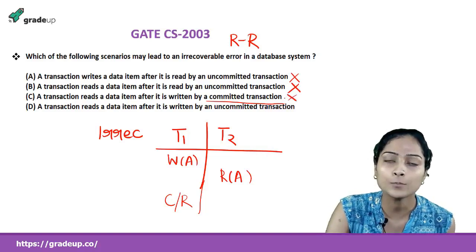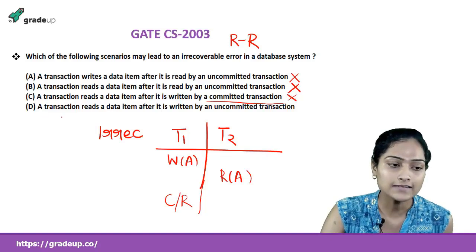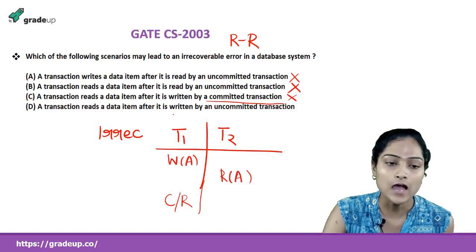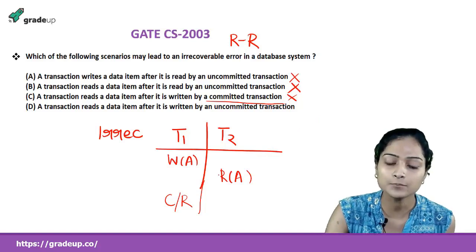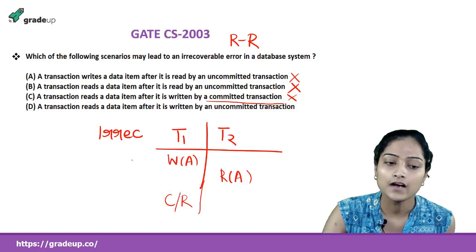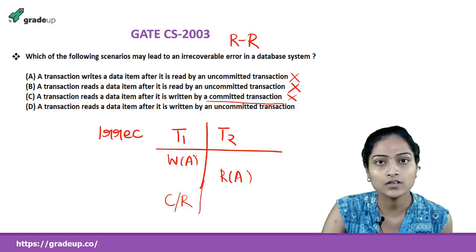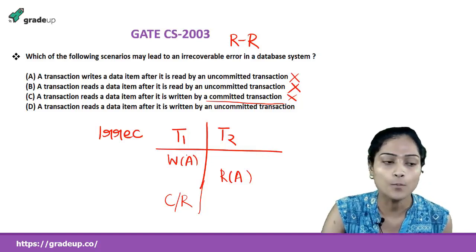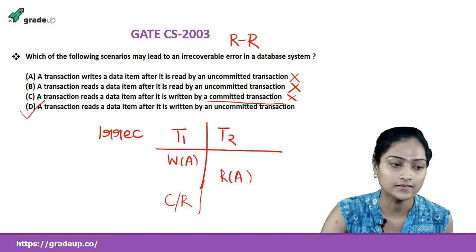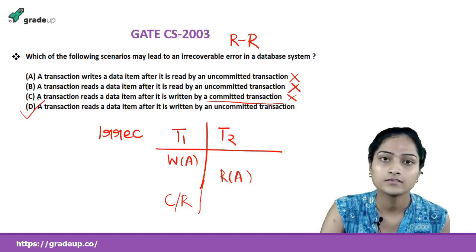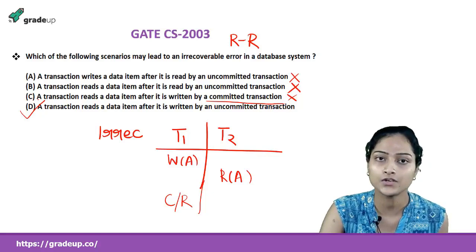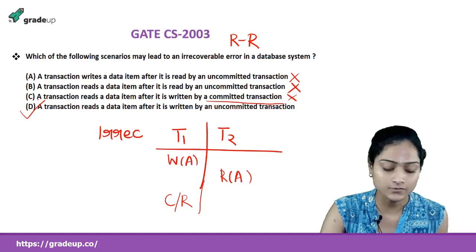Option D says a transaction reads a data item after it is written by an uncommitted transaction. Transaction T2 is reading data item A after it is written by transaction T1, which has not committed yet. So option D is correct. This was about the recoverability problem in our database system and schedules.